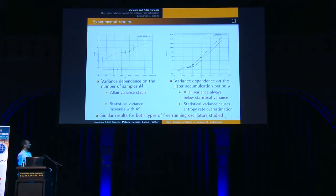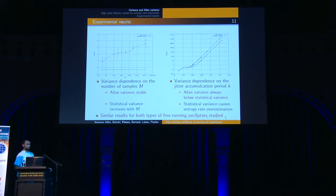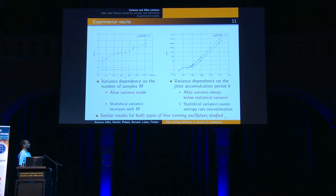On the right side, we can see that based on the jitter accumulation period K — corresponding to the number of reference clock periods used to generate one sample — Allan variance stays always below the statistical one. The statistical variance really overestimates the jitter. Our intention is to use the lowest accumulation time period possible to reduce the impact of low-frequency noises such as flicker noise, but below a certain value, quantization noise prevails, so we need to choose a suitable compromise. For both oscillator types tested, these results were very similar.